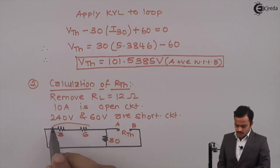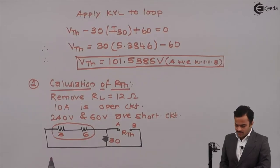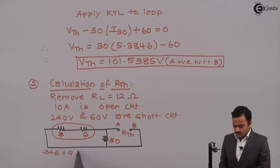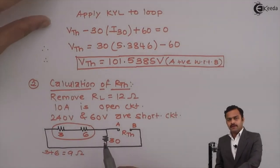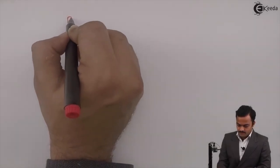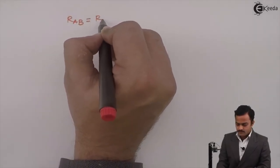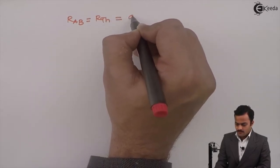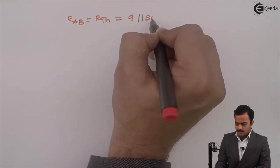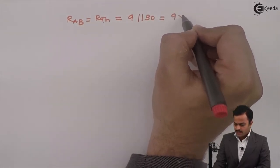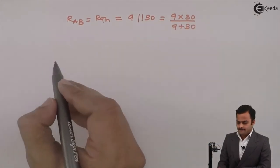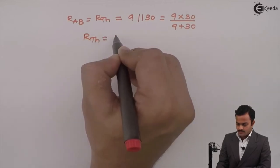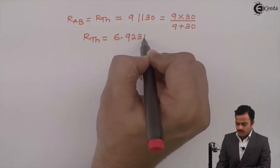It is obvious over here 6 and 3 are in series. Equivalent I will get 3 plus 6 equal to 9 ohm. If we see properly this 9 will come in parallel with 30 giving RAB or RTH as 9 parallel 30 which can be solved like this 9 multiplied by 30 divided by 9 plus 30. RTH I will get 6.9231 ohm.